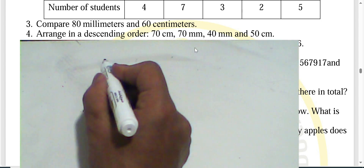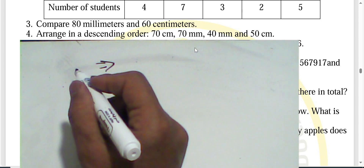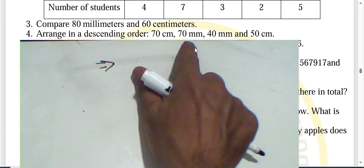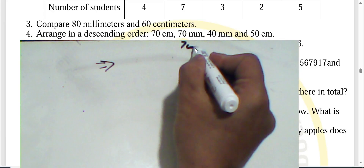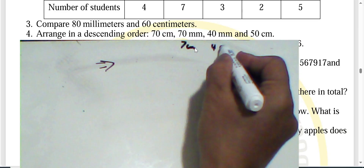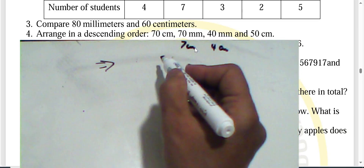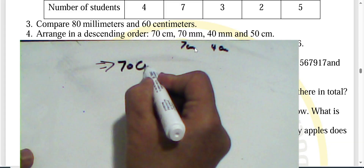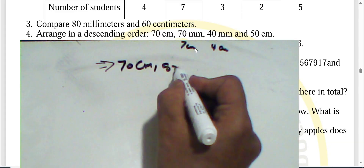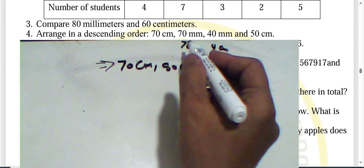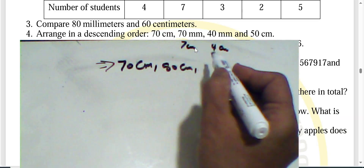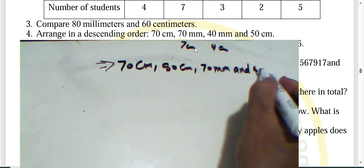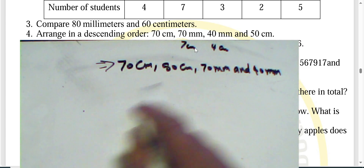Question four: arrange in descending order from greatest to smallest. Converting all units: 70 centimeters, 50 centimeters, 70 millimeters, and 40 millimeters. The order from greatest to smallest is: 70 cm, 50 cm, 70 mm, 40 mm.